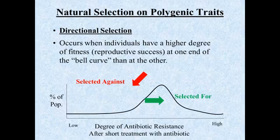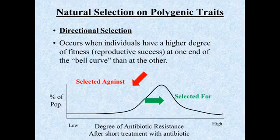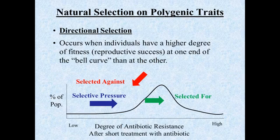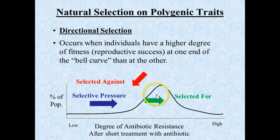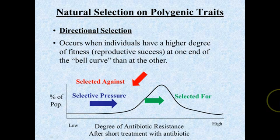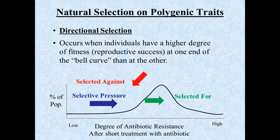That is what directional selection is, along with an example of it. One other thing to mention is the concept of a selective pressure. In this example, the selective pressure can be thought of as pushing the bell-shaped curve from the left over towards the right — pushing toward the higher end of the degree of antibiotic resistance.